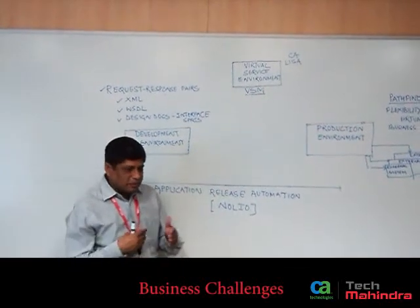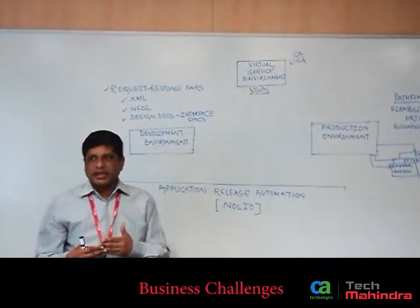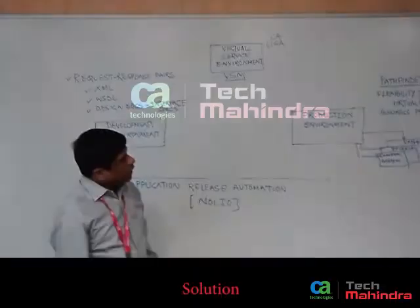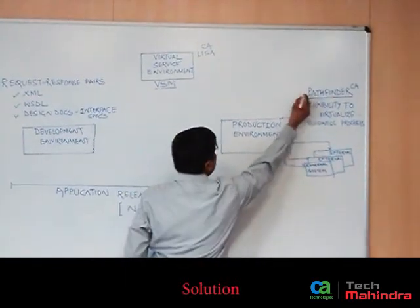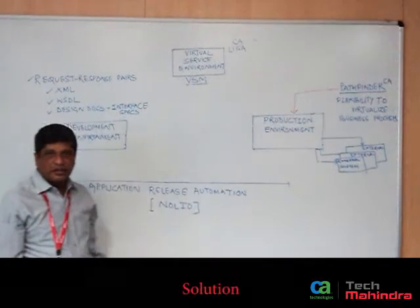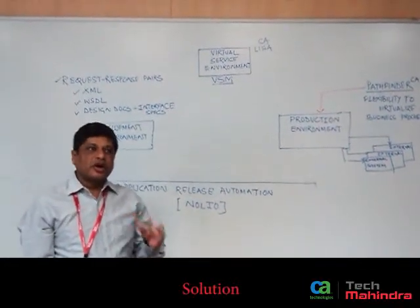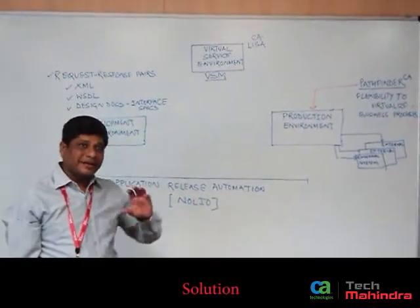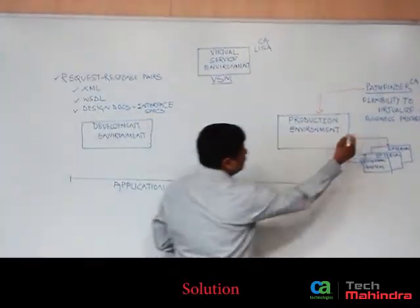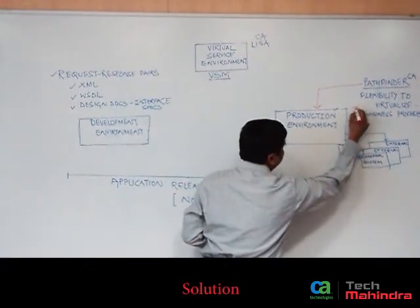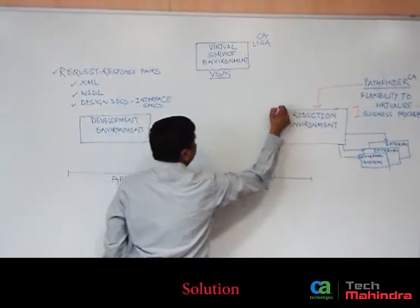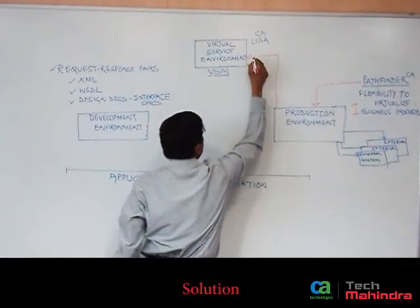When we analyzed all of this, we realized we should be looking at a solution that is more holistic. As a solution, we took CA Pathfinder, installed that tool onto the production environment, and leveraged it to listen to all the transactions happening by end users in production. We then leveraged the flexibility of virtualizing those business processes to create virtual images and deploy them onto a BSC.